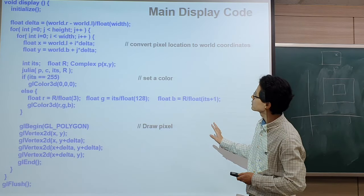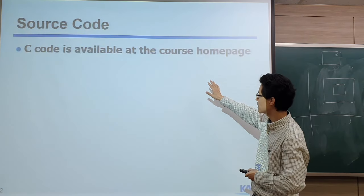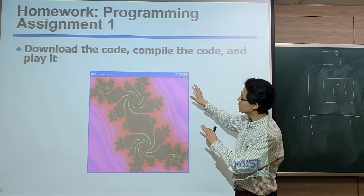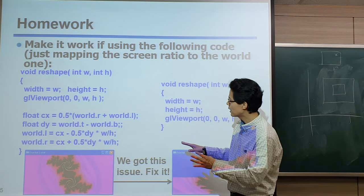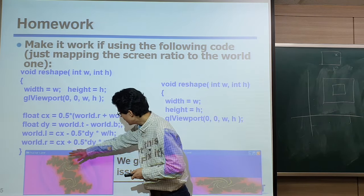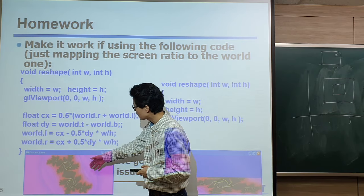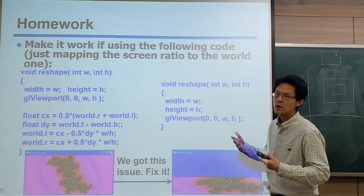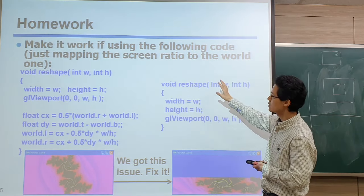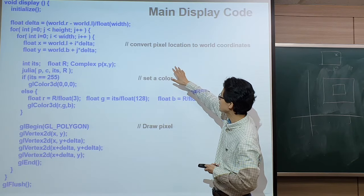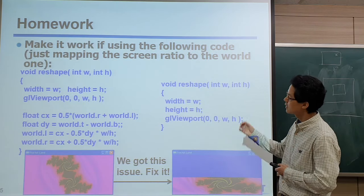Basically, the prior setting assumes I'm maintaining the aspect ratio of the world width and height in the screen space. Now I want to follow the ratio between width and height of the screen space in the world. So there's some line — I think the upper line should be changed. Think about it and fix it, then submit that one.